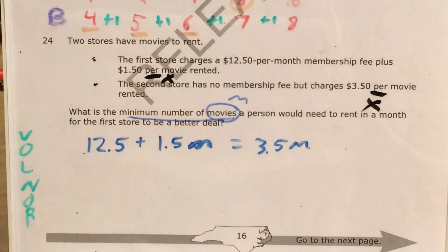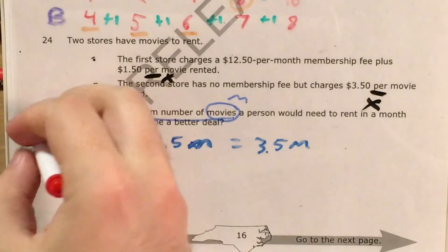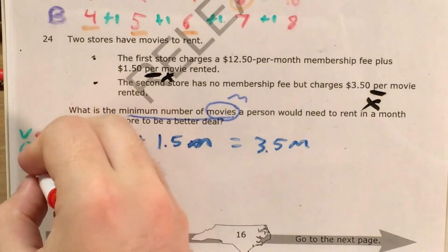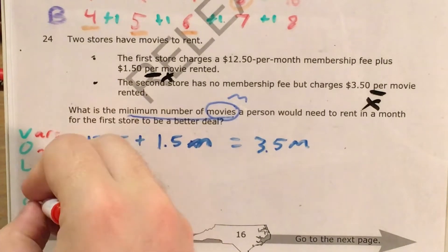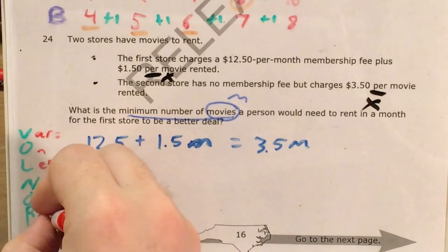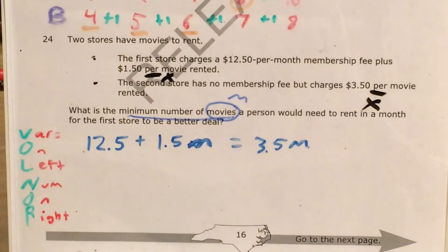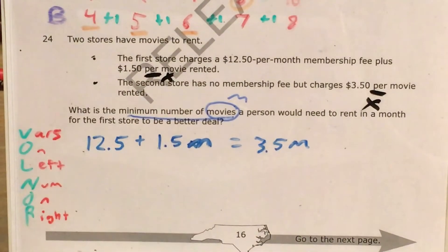VULNOR stands for: variables on the left and numbers on the right. So I'm going to start working on that.